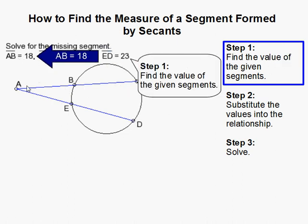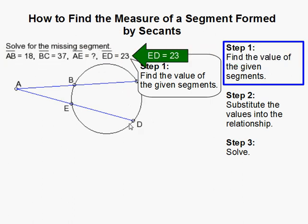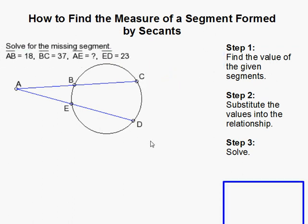We're given AB is 18, BC is 37, and ED is 23. Now we need to find this one right here, AE.